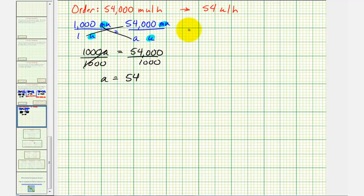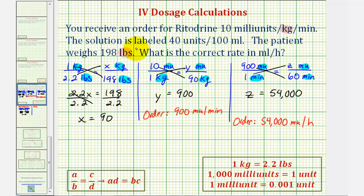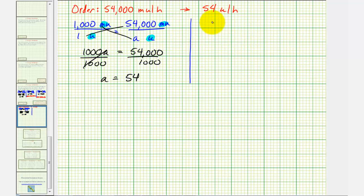Now we need one more proportion. We need to determine how many milliliters is required for 54 units. So going back to the given information just for a moment, notice how the solution has a rate of 40 units per 100 milliliters. So we can say 40 units is to 100 milliliters as 54 units is equal to an unknown number of milliliters, which we'll say b milliliters.